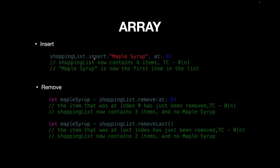If you want to insert a new value at a specific position, use the insert function, providing the value and the index. For example, maple syrup will be inserted at index 0 in our shopping list, so shopping list now contains four items with maple syrup at the front. The time complexity for insert is O(N) because inserting at index 0 requires shifting all existing elements — index 0 moves to 1, index 1 to 2, and so on.